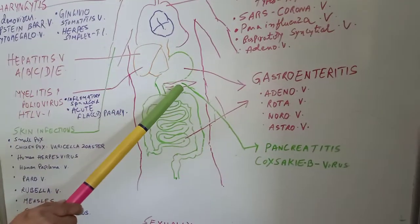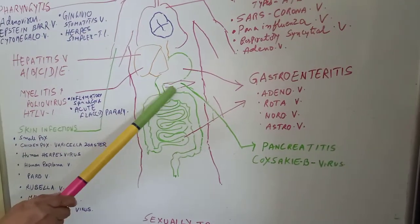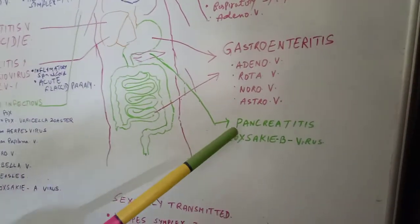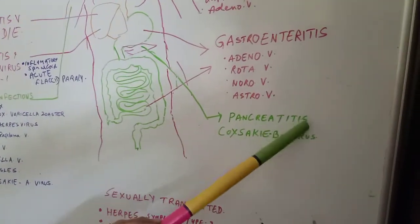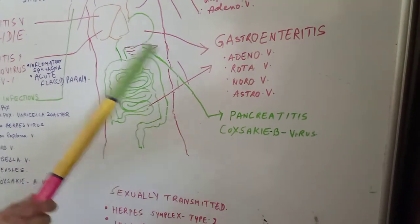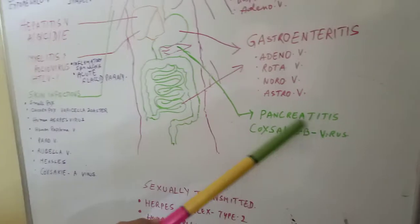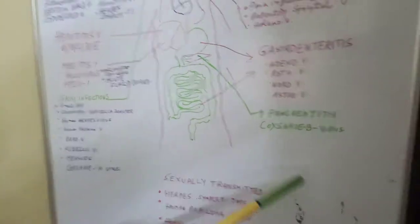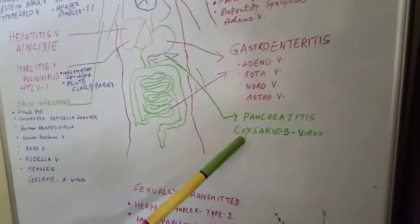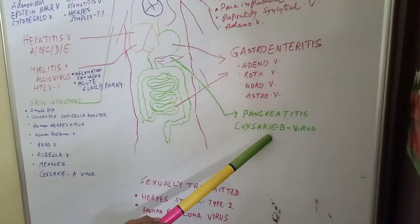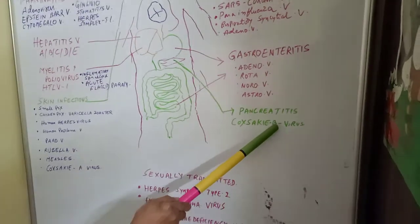Underneath the stomach you find the pancreas. Pancreatitis is infection of the pancreas, caused by Coxsackievirus type B.